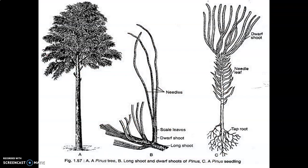This is the Pinus tree, conical in shape. This is the long shoot, and this is the dwarf shoot. After a certain growth, the dwarf shoot terminates into needles. This is Pinus roxburghii, showing trifoliate — 3 needles on a dwarf shoot. In other species, there can be 2, 4, or 5 needles; minimum 1 and maximum 5 needles can be present.